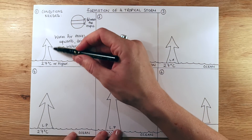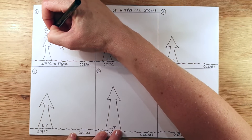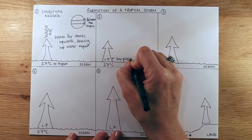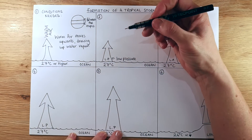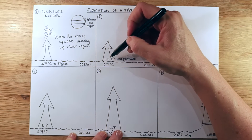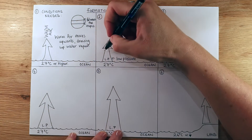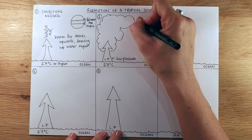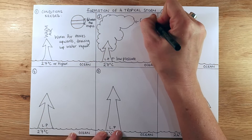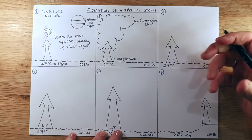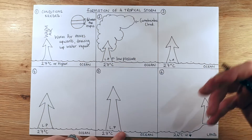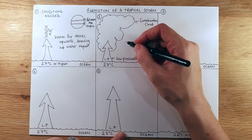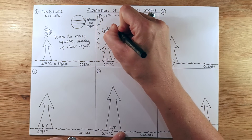In stage two, because that warm air is rising, it's creating an area of low pressure. That low pressure has rising air and actually creates what we call cumulonimbus clouds — those really big, puffy storm clouds you sometimes see before it starts raining. The evaporated air moving upward has cooled down and condensed, so there's a big process of condensation going on.